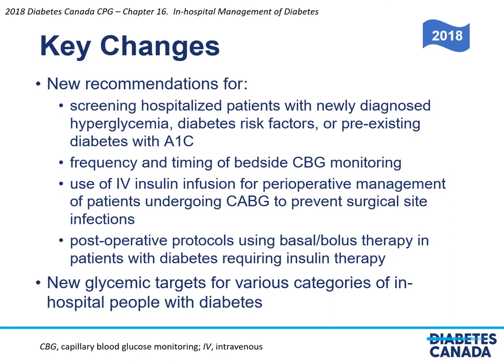There are a number of updates from the 2013 clinical practice guidelines for this chapter. Key changes include recommendations for screening of hospitalized patients with newly diagnosed hyperglycemia, diabetes risk factors, or pre-existing diabetes with A1C, and recommendations for the frequency and timing of bedside capillary blood glucose monitoring for various categories of hospitalized patients. For surgical patients, there are new recommendations for the use of IV insulin for bypass surgery to prevent surgical site infections, and for all surgical patients, it is now recommended to use protocols consisting of basal bolus therapy for patients with diabetes requiring insulin therapy in the post-operative period. Finally, there are updated recommendations for glucose targets for various categories of hospitalized people with diabetes.